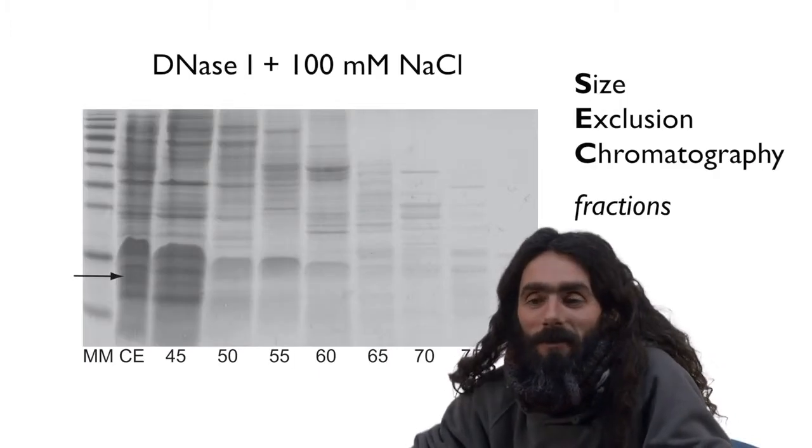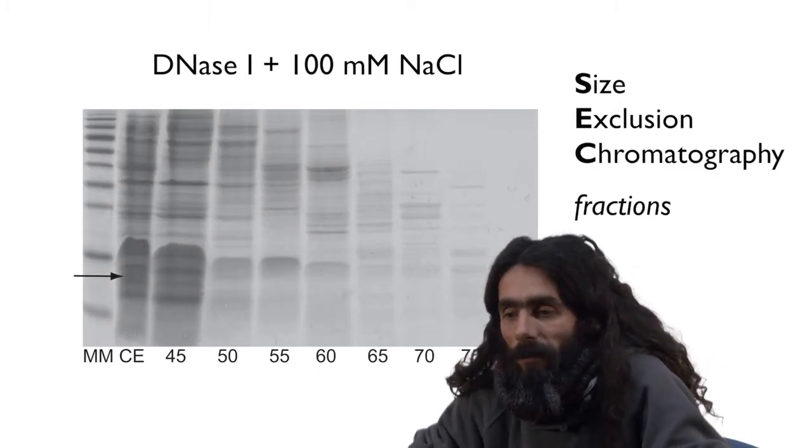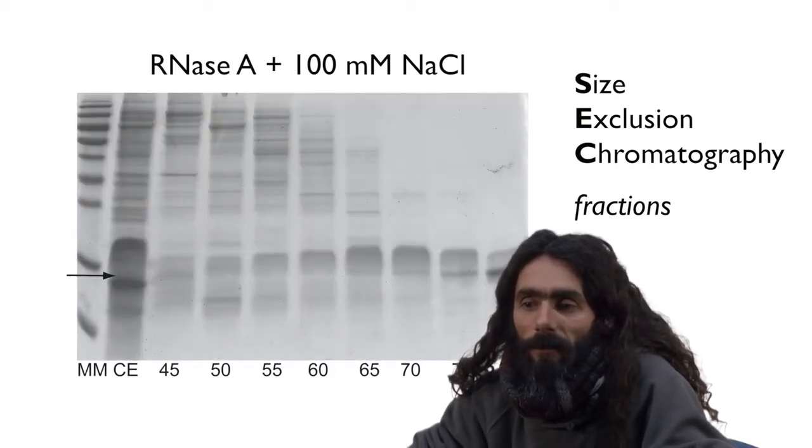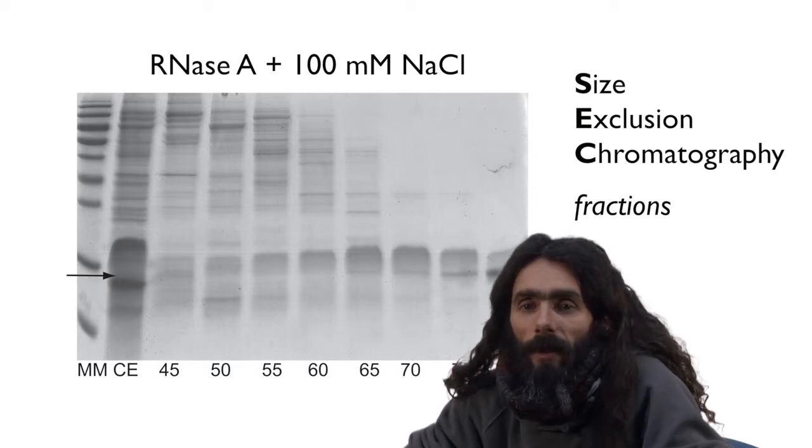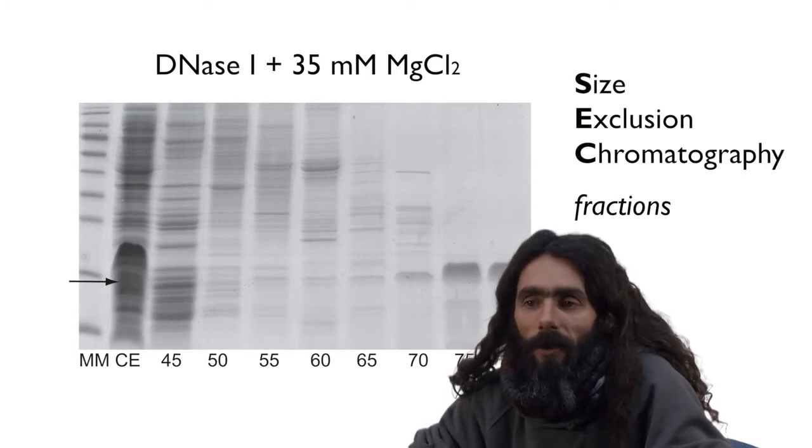We can easily observe in the SEC where our protein of interest elutes, and this provides information on the potential complexes that that protein is part of. Ideally, we can change the conditions in our SEC and alter the nature of those complexes and therefore learn about the types of interactions that hold the protein to other macromolecules in the extract.